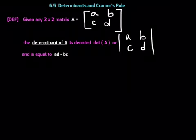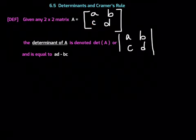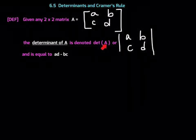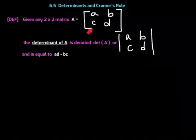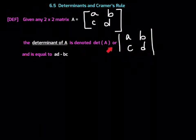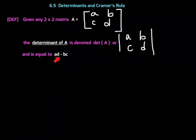Let's start with the definition. Given any two-by-two matrix, call it matrix A, with entries A, B, C, D. The determinant of A is denoted as det(A), or using vertical bars around the matrix entries. These are not brackets — they are like vertical absolute value bars — and that's our way of saying you're taking the determinant of matrix A. If you use brackets, that's matrix notation; if you use vertical bars, that means determinant notation. The determinant of a two-by-two matrix is equal to AD minus BC — that is, A times D minus B times C.